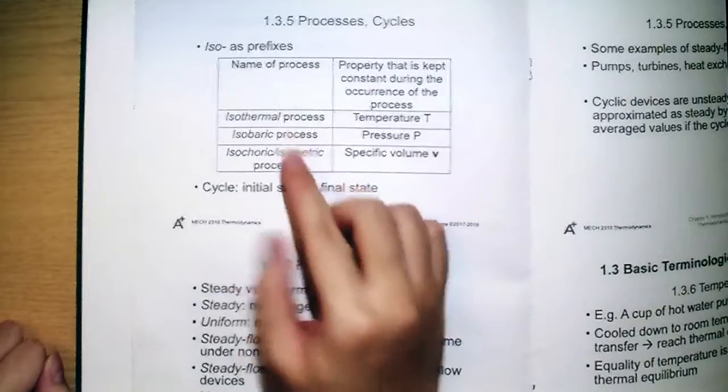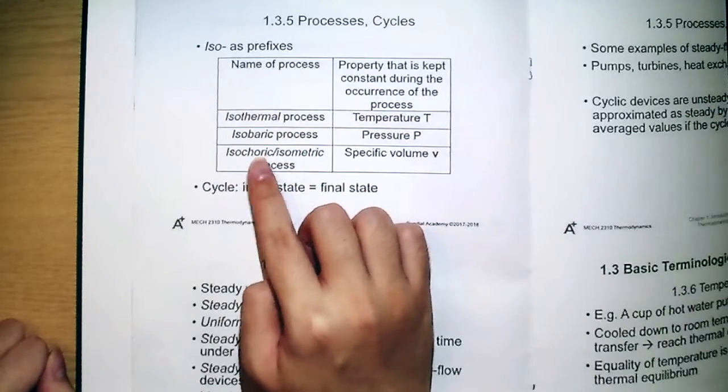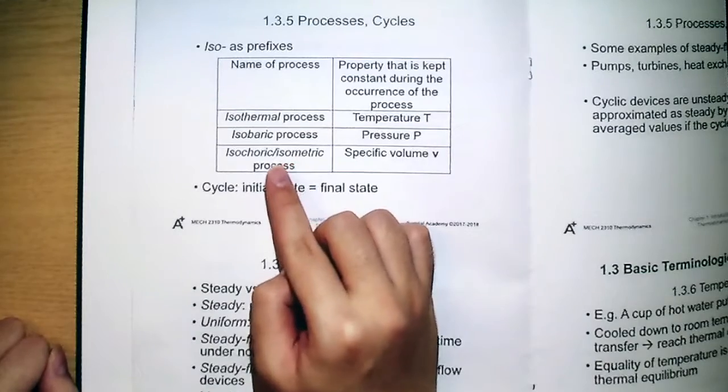We will have these three typical processes. That's the isothermal process, isobaric process, and also the isochoric or isometric process.